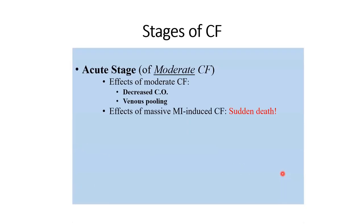Now the stages of cardiac failure. Cardiac failure doesn't just happen in all cases — in a few cases it happens suddenly and leads to death. But generally speaking, it follows a course. There is an acute stage — in moderate cardiac failure, the acute phase has two features: decreased cardiac output and the resultant venous congestion, whether systemic or pulmonary, depending on which side of the heart has failed. If the initial cardiac failure is severe — massive — for example some myocardial infarctions are so large that death happens suddenly during the acute phase, within hours of symptoms.